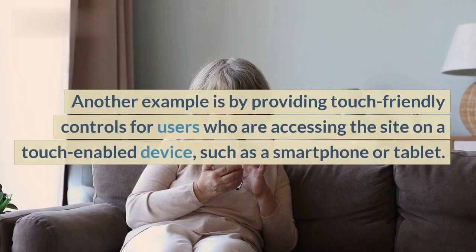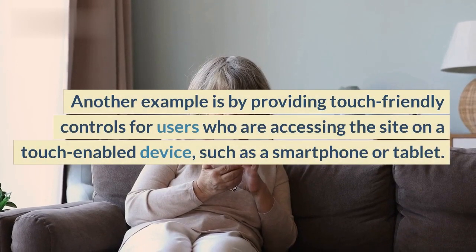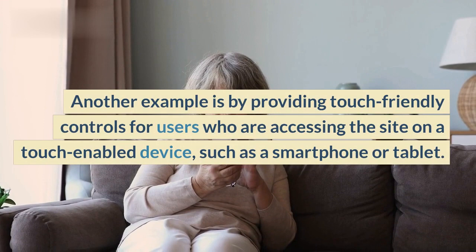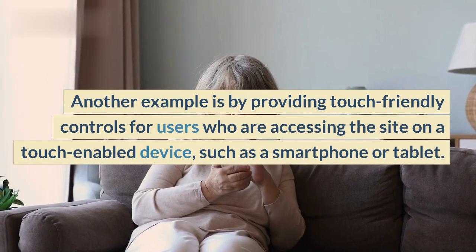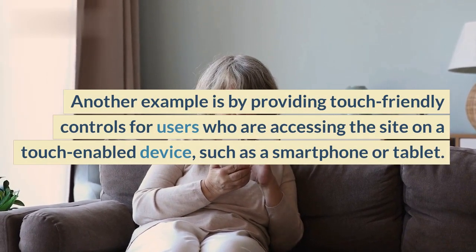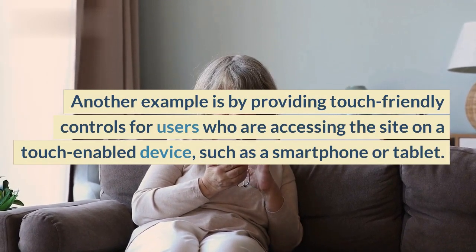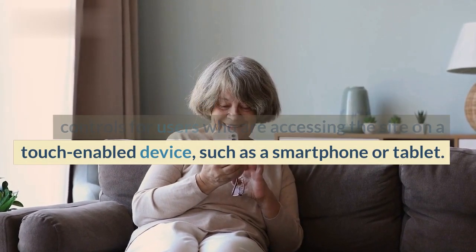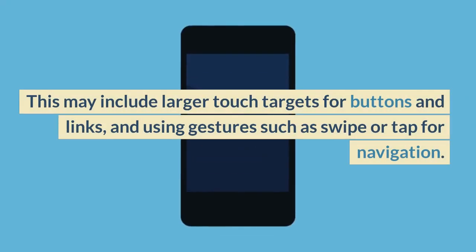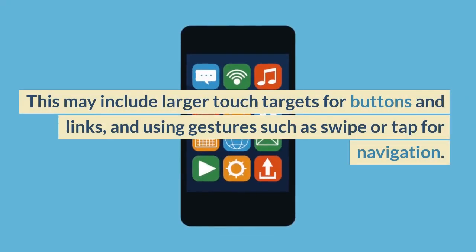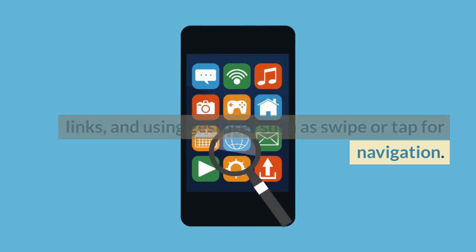Another example is by providing touch-friendly controls for users who are accessing the site on a touch-enabled device, such as a smartphone or tablet. This may include larger touch targets for buttons and links, and using gestures such as swipe or tap for navigation.